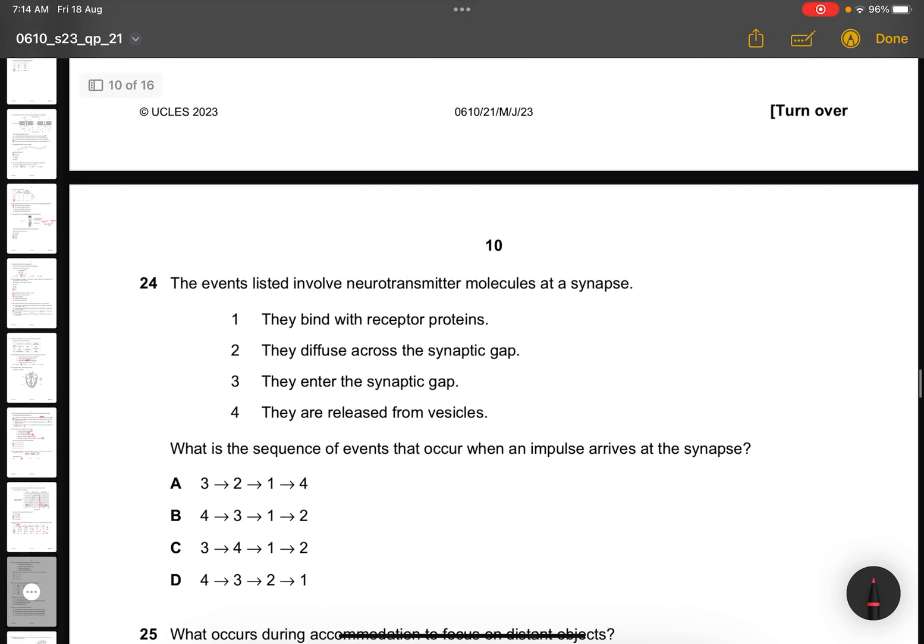Question 24. The events listed involve neurotransmitter molecules at the synapse. What is the sequence of events that occurs when an impulse arrives at the synapse? This will be D. First, they are released from the vesicles, which give the neurotransmitters. Then they will enter the synaptic gap or the synaptic cleft. And then it will diffuse across it and then bind with the receptor proteins.